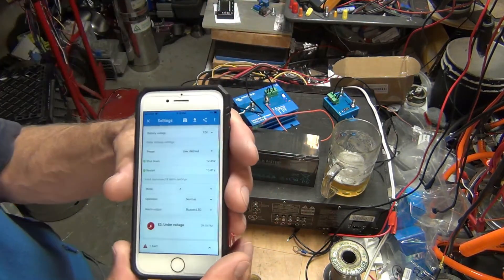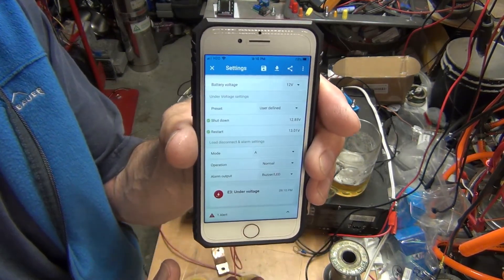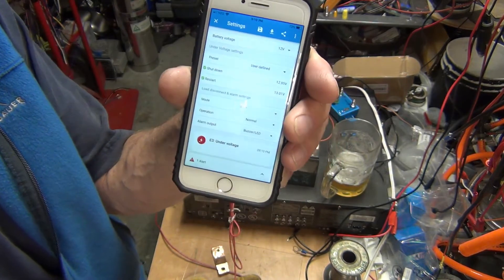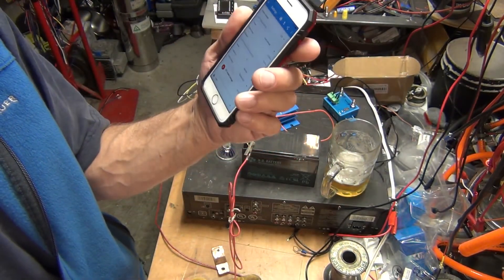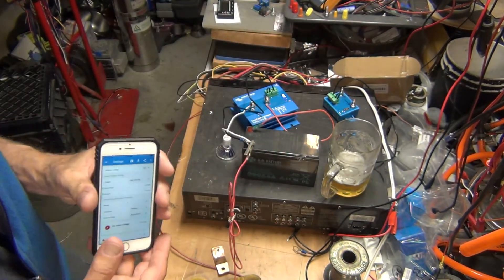And now it's going to stay off until the battery goes back to 13 volts that I have set right here. You can see that. I hope you can see that the battery is set to 13.1 volts to restart. So this is very helpful.